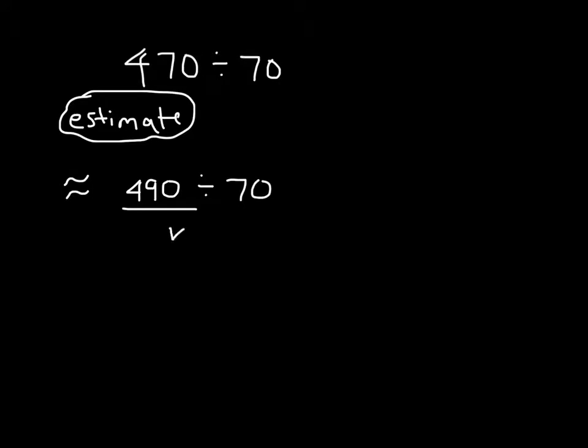And working that out, 490 divided by 70, 49 divided by 7 is 7. And then it would be divided by 10 as well. And that's why it is that you get 7 there.